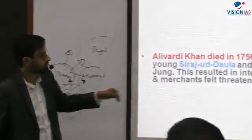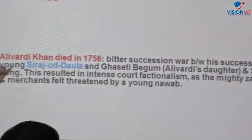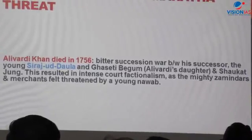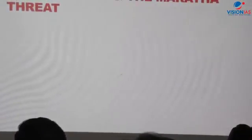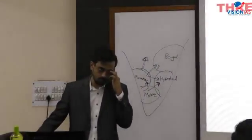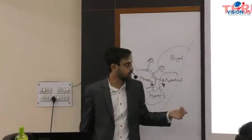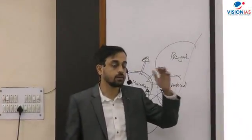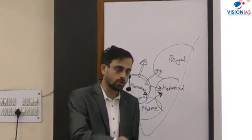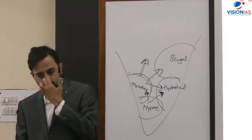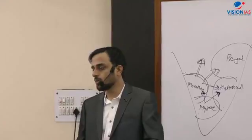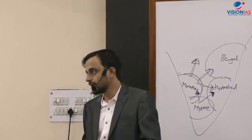Returning to Bengal: Aliwardi Khan died in 1756 and was replaced by Sirajud Daula. With his death, there was a succession dispute between Sirajud Daula — a descendant of Aliwardi Khan — Ghassiti Begum, who was Aliwardi Khan's daughter, and Shawkat Jung. The names are not very important. What matters is that Sirajud Daula was a young Nawab, almost in his early twenties, when he became the Nawab of Bengal.